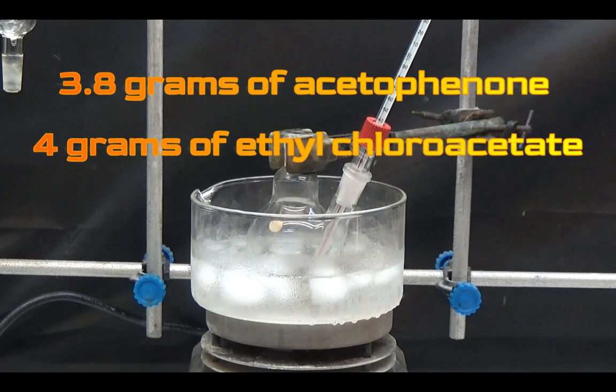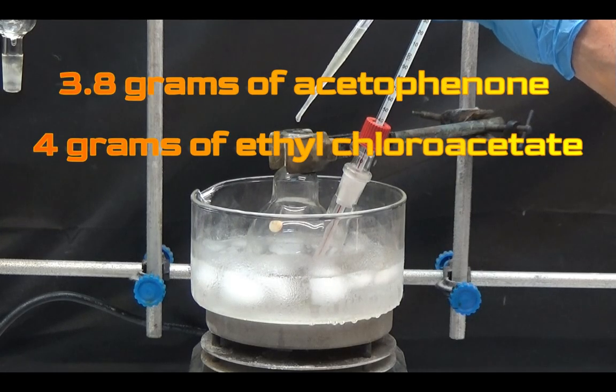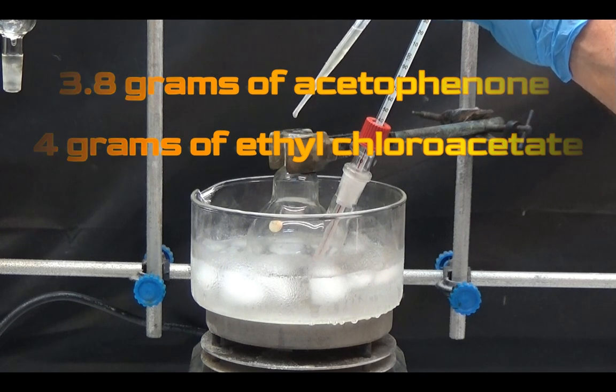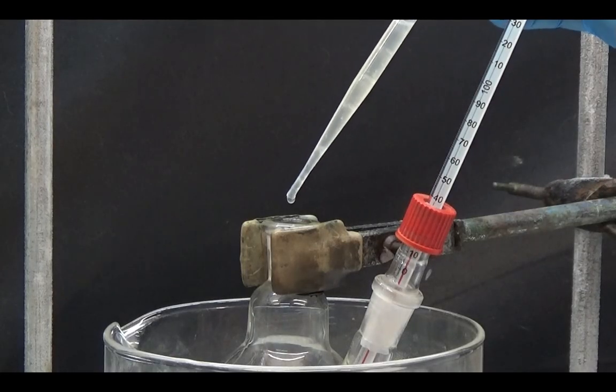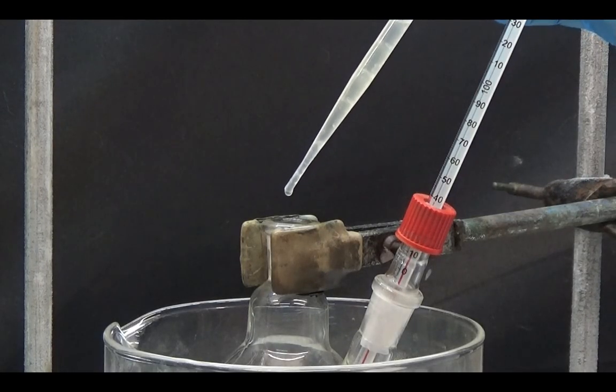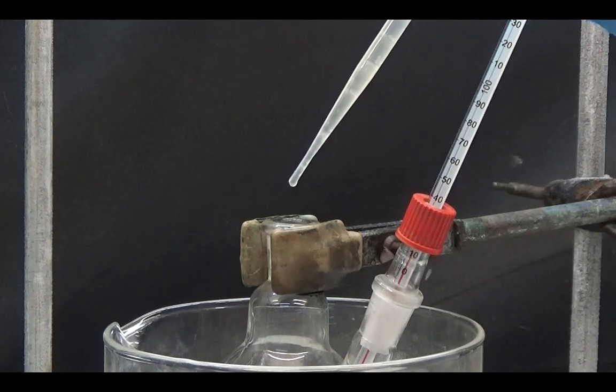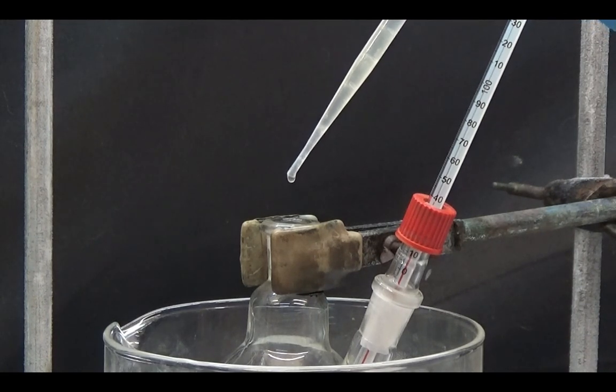3.8 grams of acetophenone and 4 grams of ethyl chloroacetate were placed in a 100 milliliter two-necked flask with a thermometer and cooled in an ice bath. With stirring, we slowly add the sodium ethoxide suspension prepared previously. It is important to keep the temperature between 10 and 15 degrees.